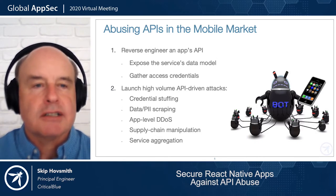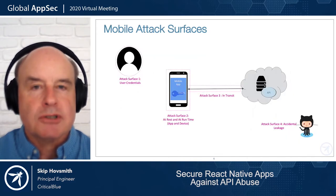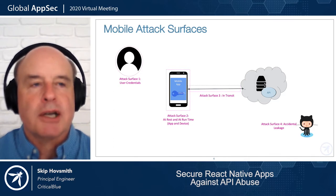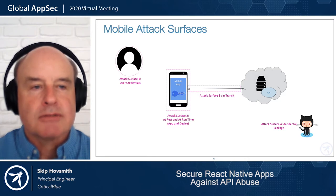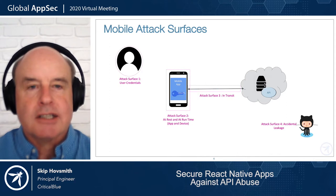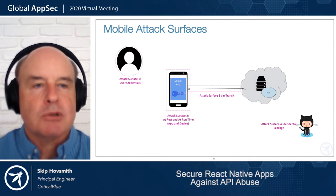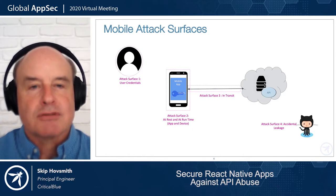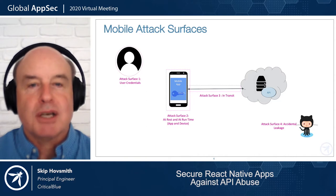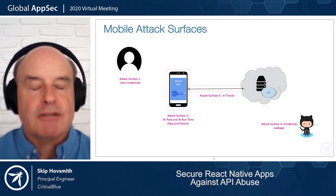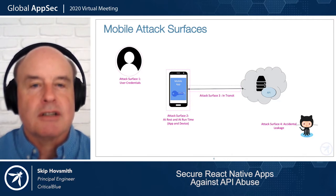There are four attack surfaces in the mobile application API space. First is user credentials — a well-understood area using OAuth or OpenID Connect, so I won't focus on that much today. Second is the application running on the device itself, both statically as code and dynamically at runtime. Third is the channel once an API call leaves the device. And fourth is the public or accidental surface — accidentally publishing API keys or credentials in documentation or public Git repositories.